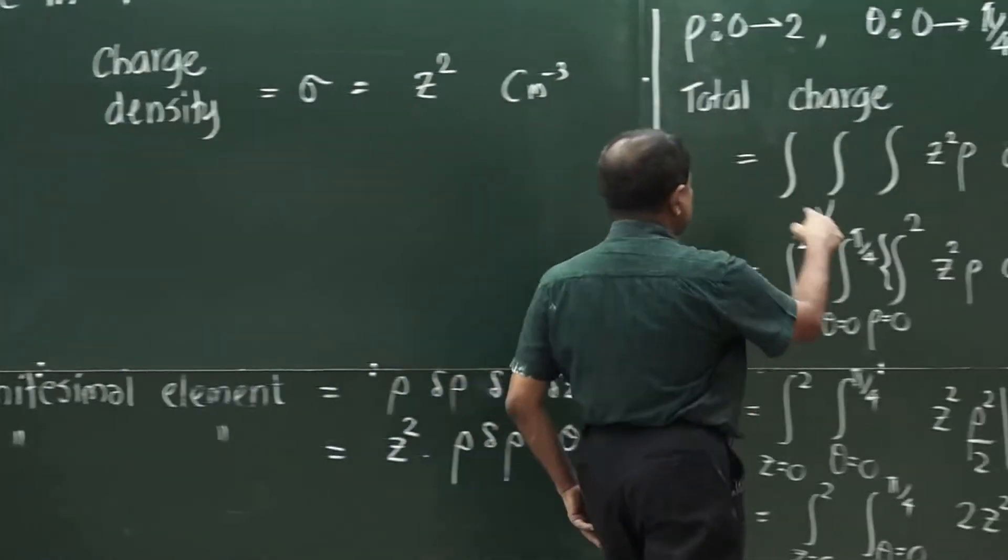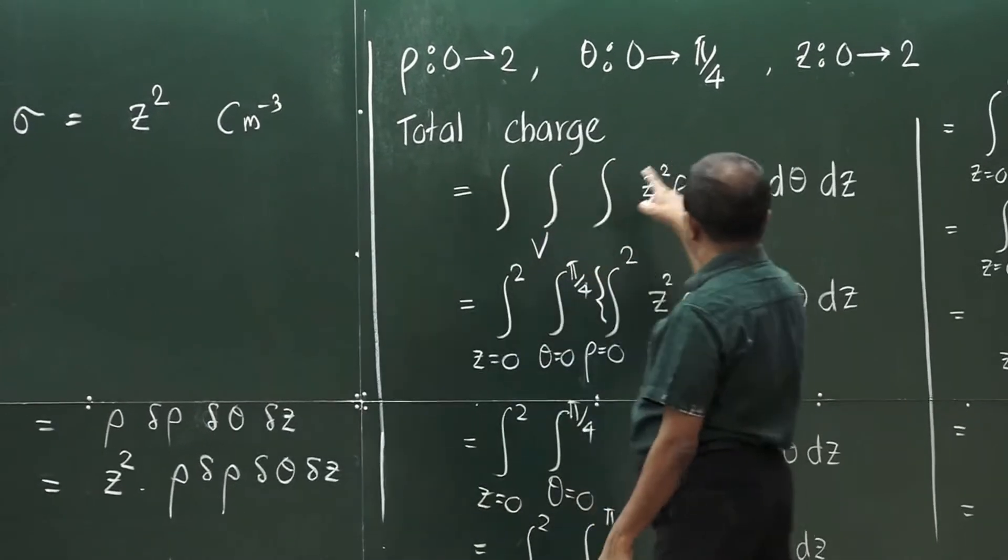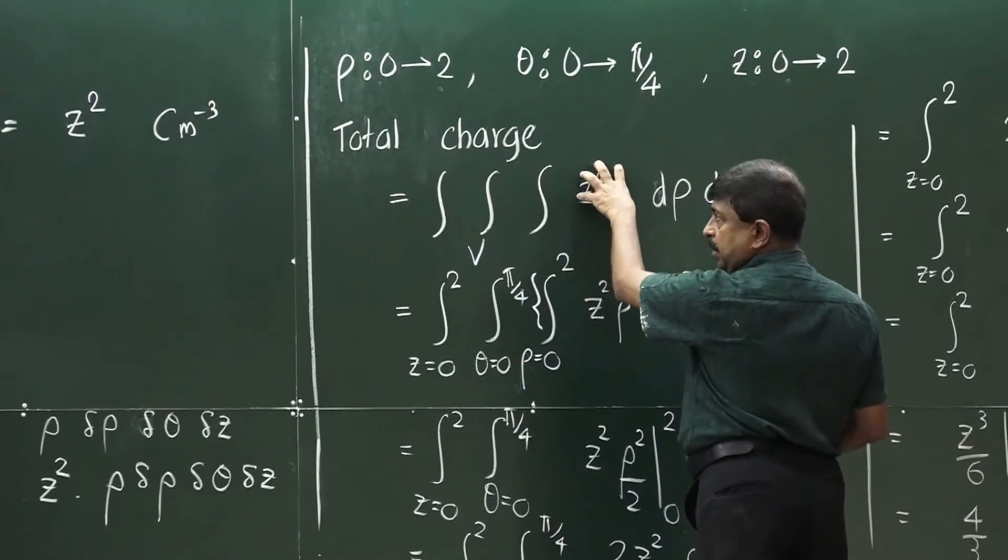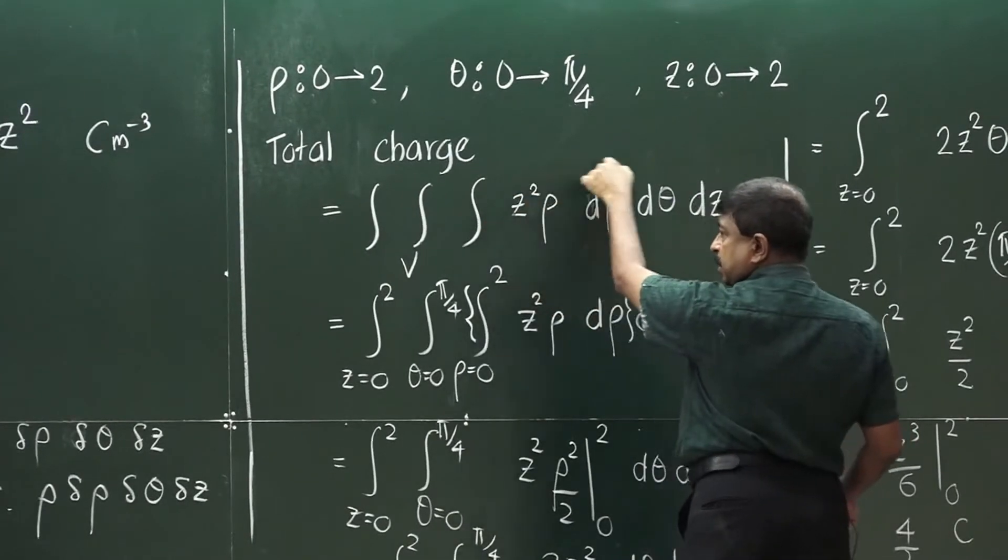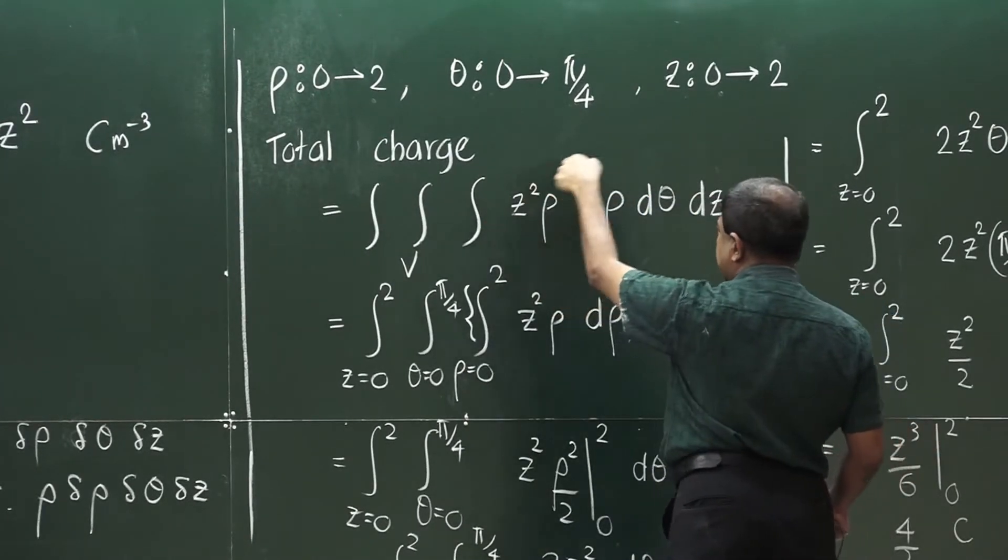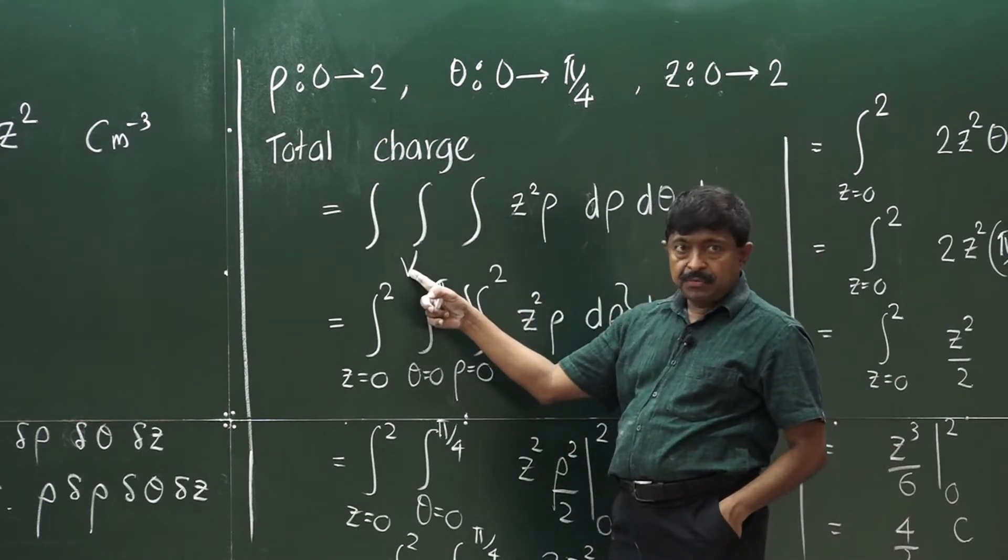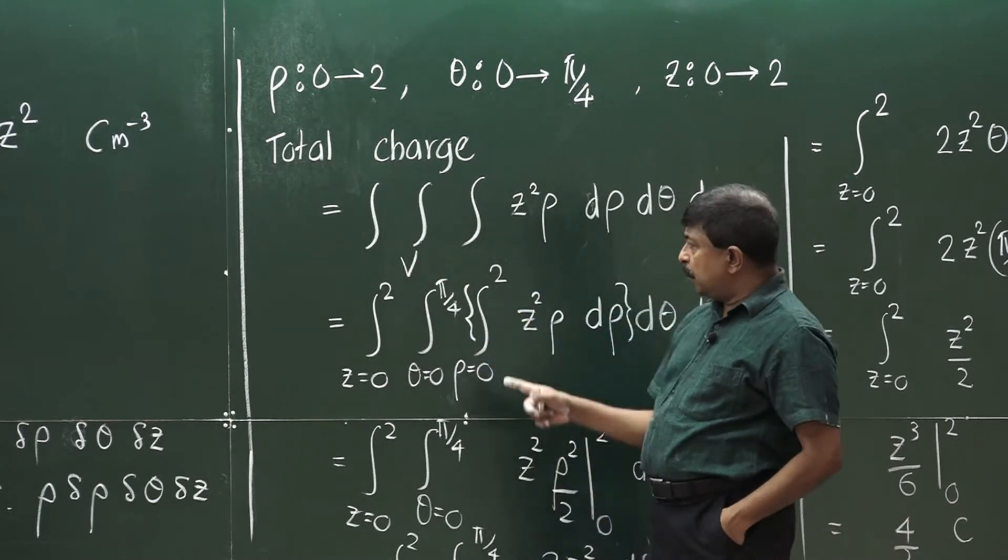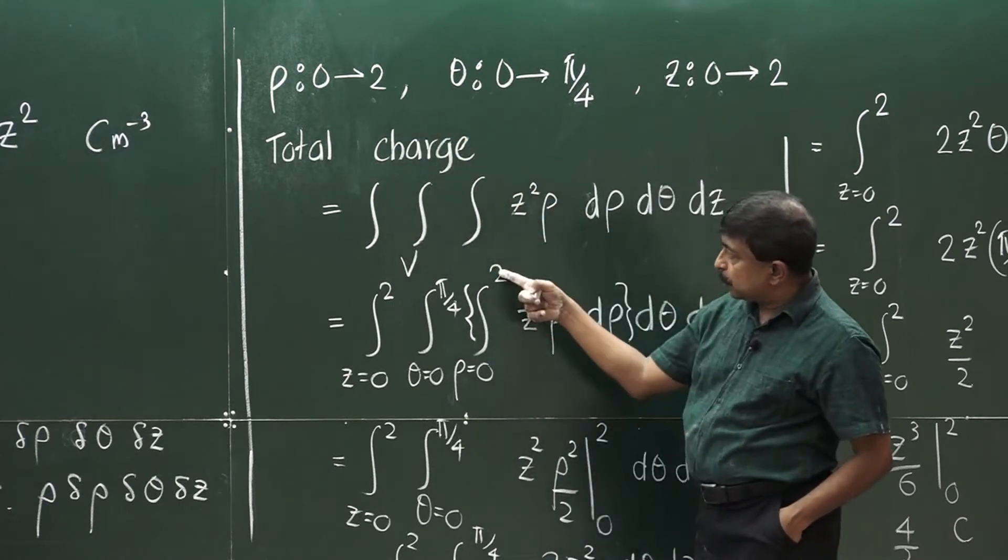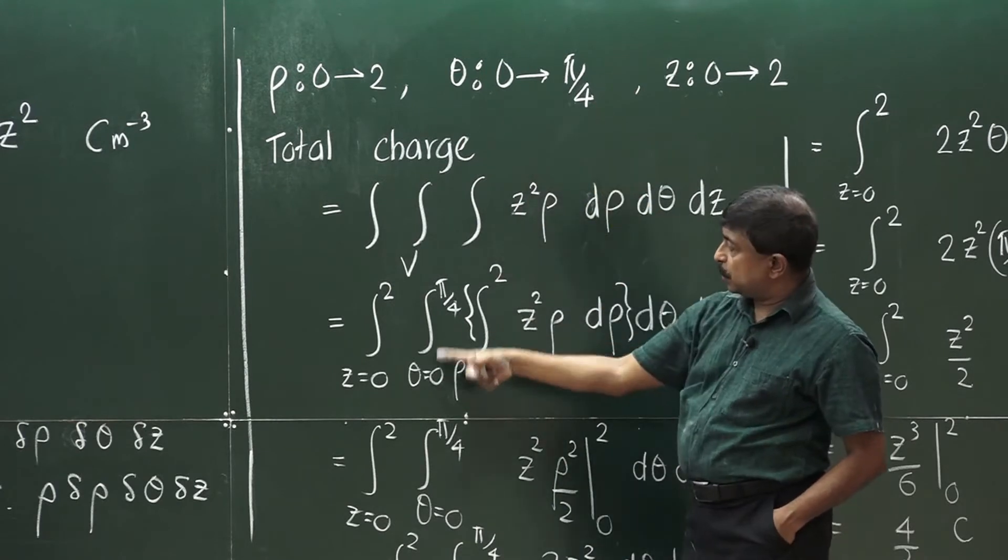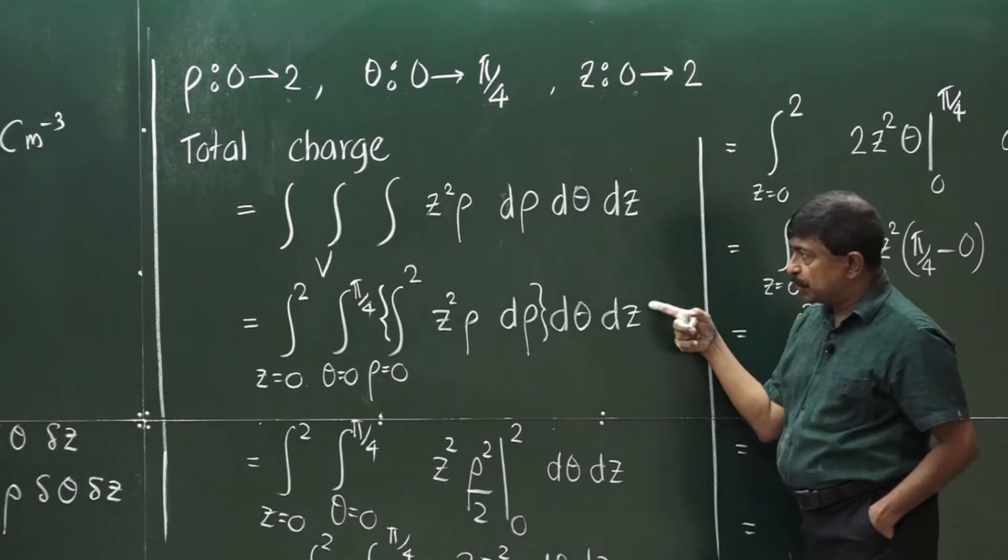Let me take that area, the volume as V. This is what we have as the charge in the infinitesimal element. We integrate it over V, the volume. We will assign the respective limits: rho varies from 0 to 2, theta varies from 0 to 5 by 4, and z goes from 0 to 2. So, this is what you get.